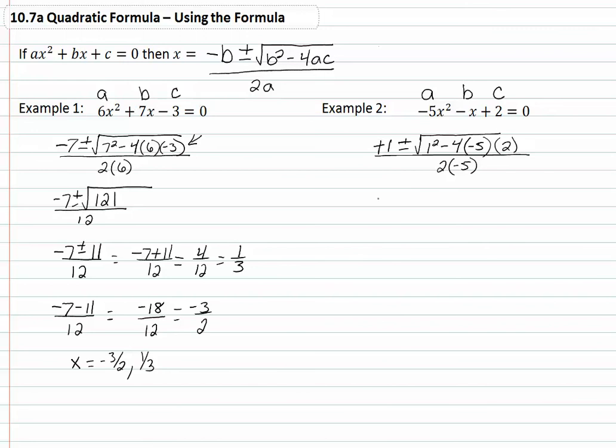So again we're going to plug this into our calculator, and we get (1 ± √41) / -10. Because 41 is not a perfect square, this will be our answer, and we will leave it just like this to enter into the computer. That concludes this lesson.